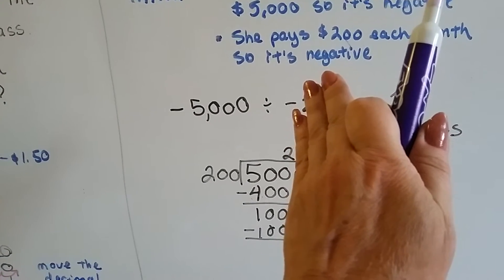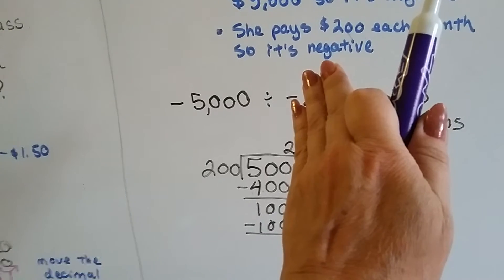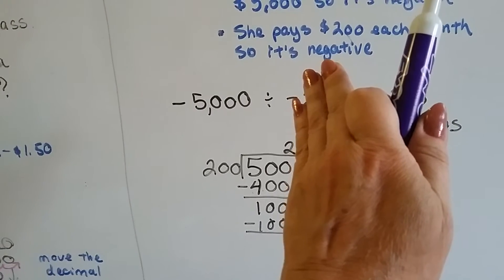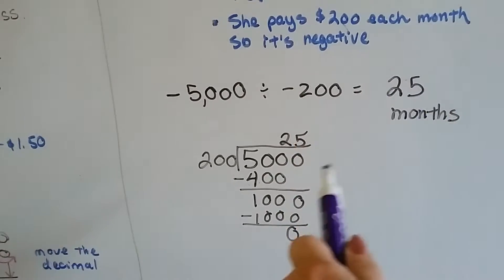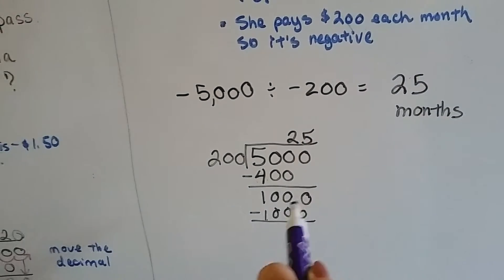Two times 200 is 400, so we can do that. We put the two above the zero in the one spot for the 500, and we multiply 200 times 2 and get 400, and we do our subtraction and get 100. And now it's this zero's turn to come down.